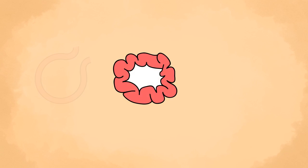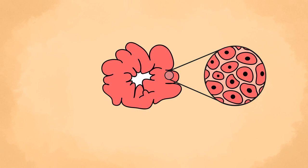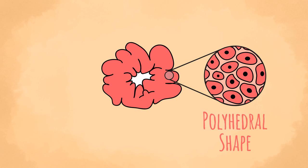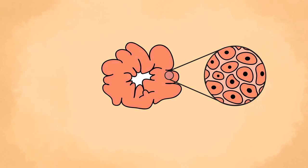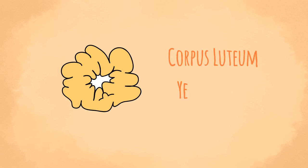Corpus luteum: When the follicle ruptures, its wall collapses and becomes folded. The follicular cells are initially small and rounded, but then rapidly enlarge. As they increase in size, their walls press against neighboring cells, acquiring a polyhedral shape. Their cytoplasm becomes filled with a yellow pigment called lutein, and they are now called luteal cells. The presence of this yellow pigment gives the structure a yellow color, which is why it is called the corpus luteum, or yellow body.